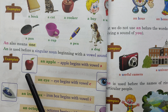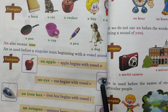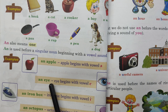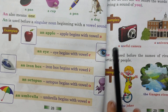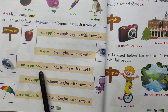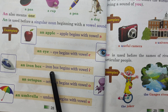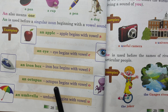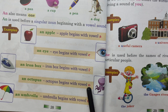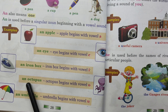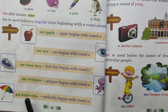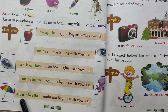AN apple. AN iron box — I begins with a vowel. AN iron box begins with a vowel. AN octopus — O is a vowel, octopus begins with a vowel. AN umbrella — umbrella begins with a vowel.